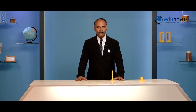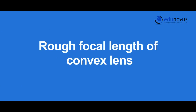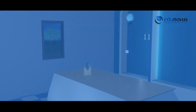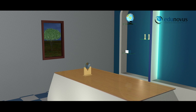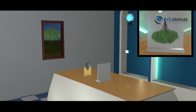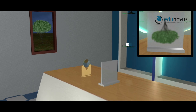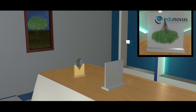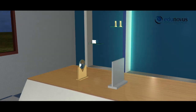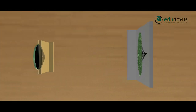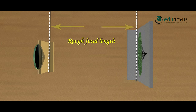Now you are familiar with the experimental setup and how to perform the experiment. Let us start the procedure by determining the focal length of the convex lens. We need to obtain the image of a distant object on the screen. When you look at the window, you can see a tree which is a distant object. Face the lens towards a distant object and obtain its inverted image on the screen. Once you get the inverted image, move the lens forward and backward until you get a sharp image. Now, with the help of a scale, measure the distance between the lens holder and the screen, which is nothing but the rough focal length.